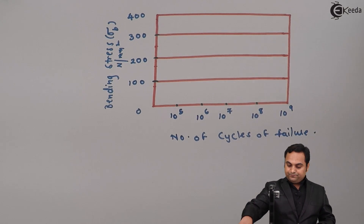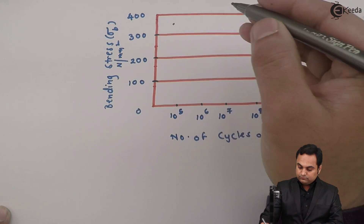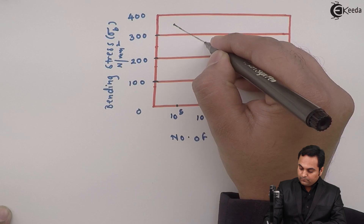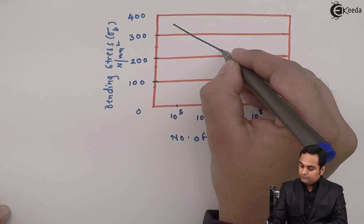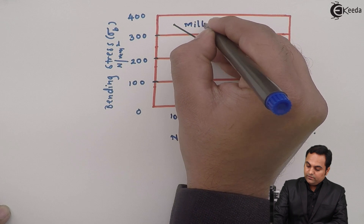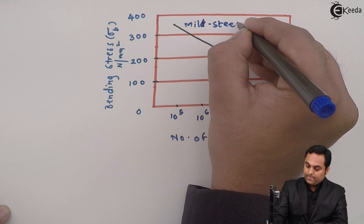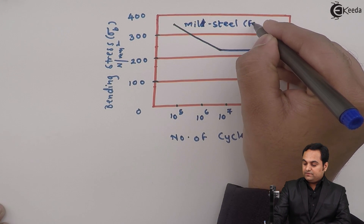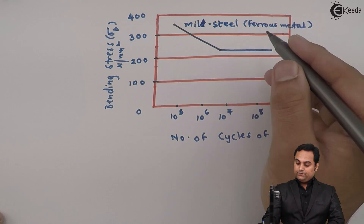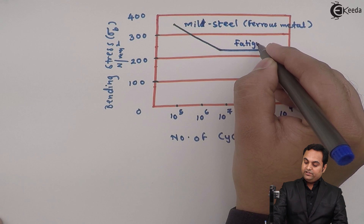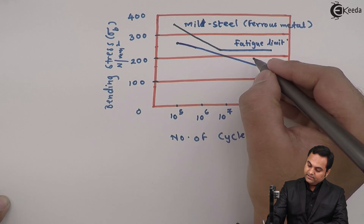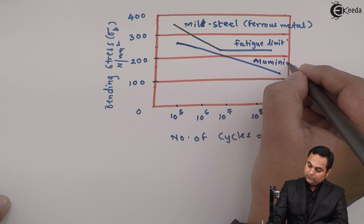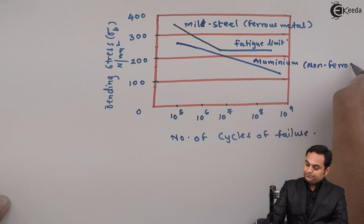I'll plot for two different materials. The first one is mild steel — this line which I have drawn indicates mild steel, which is also a ferrous metal. This constant line is called the fatigue limit. Then we have one non-ferrous metal — aluminium, which is a non-ferrous metal.